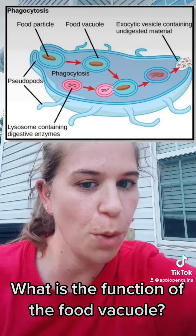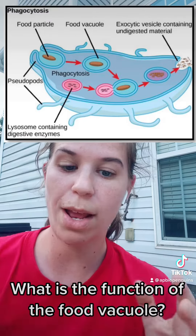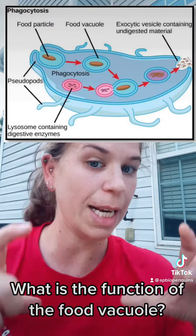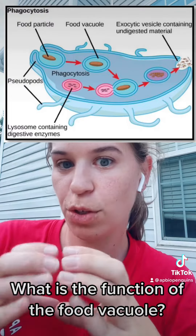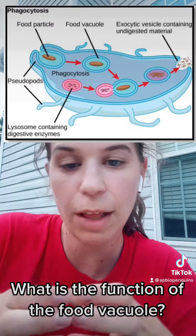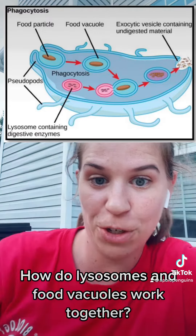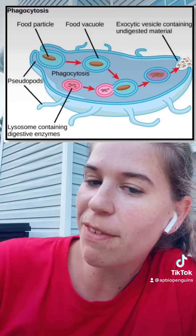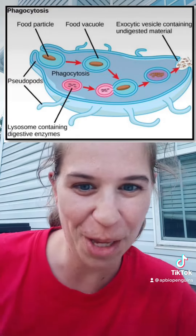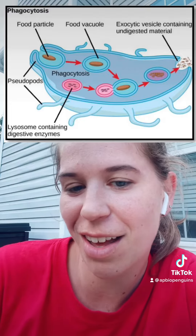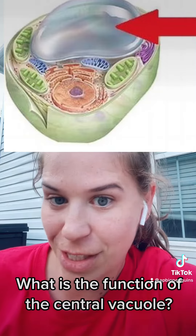During phagocytosis, the membrane surrounds a food particle, engulfs it, and brings it in — now surrounded by a membrane. We call this a food vacuole. This food vacuole is just a sac with food inside that will then fuse with the lysosome for digestion. As you see in the picture, food vacuoles are only found in animal cells, because the cell wall won't allow a cell to engulf something.